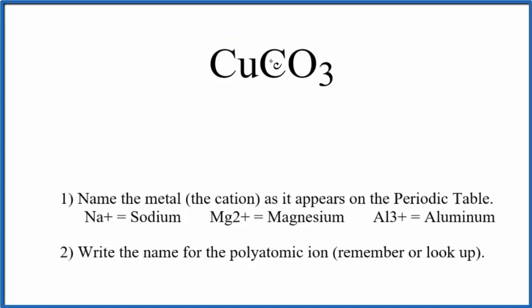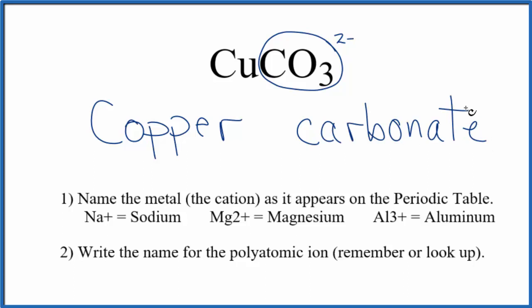So we'll first write the name for Cu, that's copper, and then we're going to write the name for the polyatomic ion. This is one you really should just have memorized. The whole carbonate ion has a two minus charge, so you need to memorize that, and we're just going to write lowercase c for carbonate. So far we have copper carbonate.